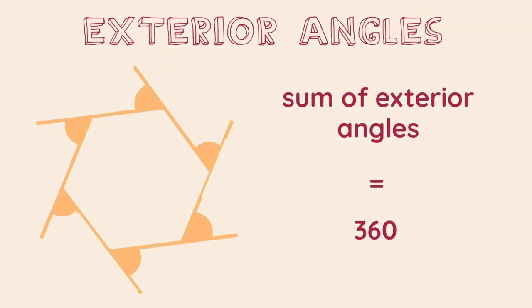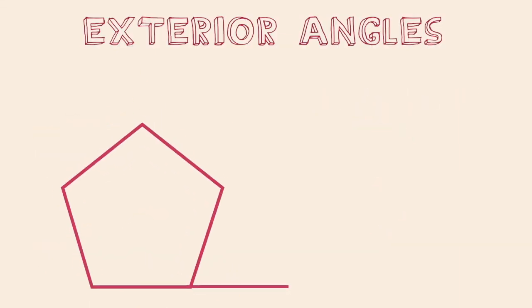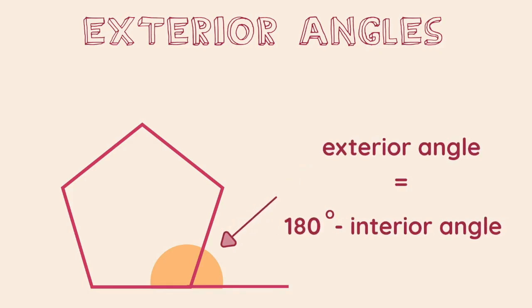Now we are looking at exterior angles. The exterior angles of any polygon will always add up to 360 degrees. If we are given the interior angle we can calculate the exterior by using the angles on a straight line fact — this is that angles on a straight line will always add up to 180 degrees.